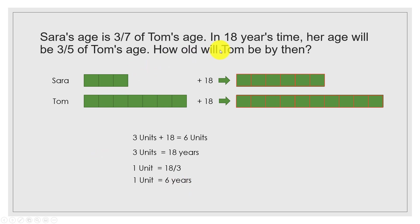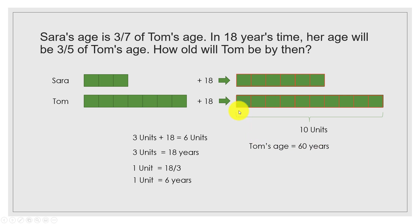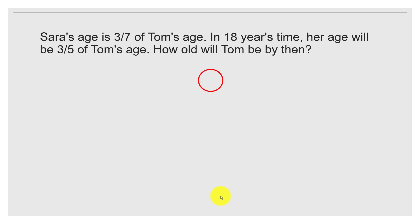Now, how old will Tom be after 18 years? Looking at the representation, Tom's age after 18 years is 10 units. Since each unit equals 6 years, Tom's age is 10 times 6, which is 60 years. This is the model method — the key concept being that the age difference remains the same.